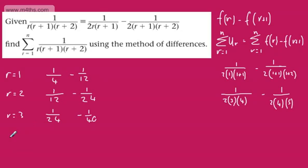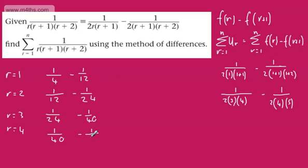Taking r=4: the first part gives 1 over 2×4×5 = 1 over 40, then we subtract 1 over 2×5×6 = 1 over 60. As you can see, the pattern is now clearly emerging — these terms are going to cancel out when we sum the series.